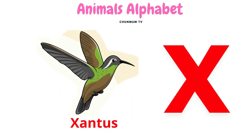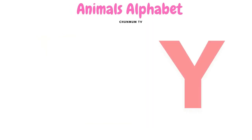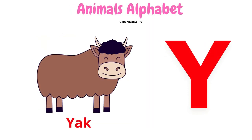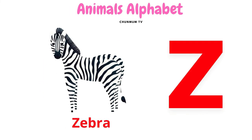X for xantus and how it sounds. Y for yak and how it sounds. Z for zebra and how it sounds. That's right!